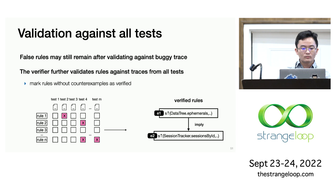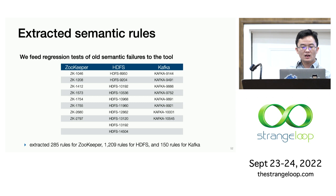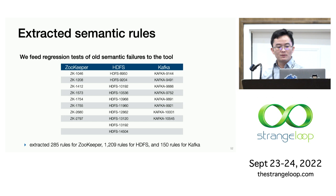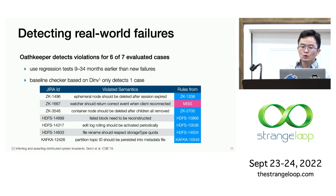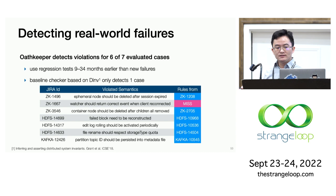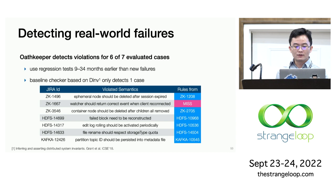We have integrated OathKeeper with ZooKeeper, HDFS, and Kafka. Because the tool requires old failures and associated regression tests to extract semantic rules, we selected several tests from each system covering major functionality. In total, given those tests, OathKeeper extracted 1,600 rules for these systems. To evaluate whether these inferred rules are useful to catch new violations, we reproduced seven new bugs reported by developers. These bugs violate related semantics compared to the old cases but with very different root causes. With inferred rules, OathKeeper can detect violations for six of them. In comparison, the state-of-the-art checker can only detect one of those violations.